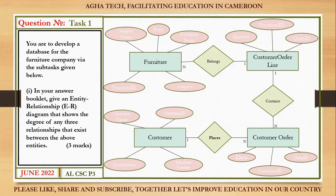The question asks us to show the degree in our diagram. The degree is the number of entity sets taking part in the relation. Here we have four entity sets taking part, so our degree is four.